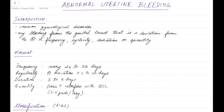Hello guys, this is Indian Medico, and in this video we are going to see about abnormal uterine bleeding. This is a concise presentation for medical students. Abnormal uterine bleeding is a common gynecological disorder, defined as any bleeding from the genital tract that is a deviation from the normal in frequency, cyclicity, duration, or quantity.